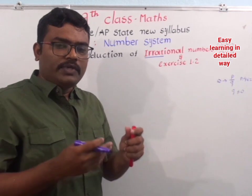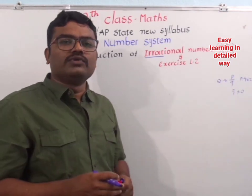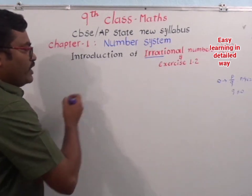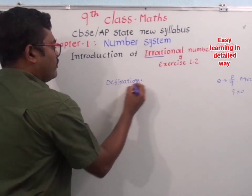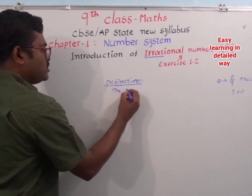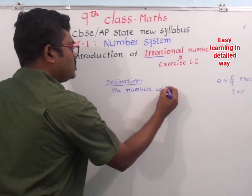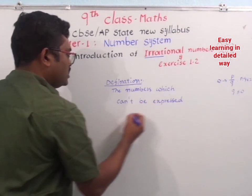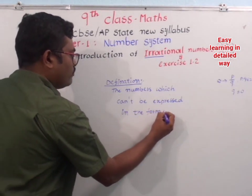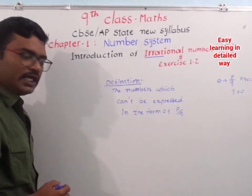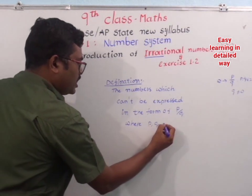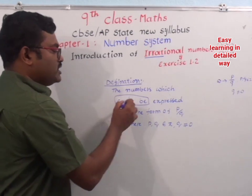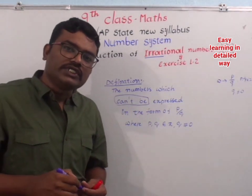Numbers in fractional form — P, Q are integers. For example, 7 or 3.2 — we can express them in fractional form. Now the definition of Irrational Numbers: those numbers which cannot be expressed in the form of P by Q, where P and Q belong to integers and Q is not equal to 0. Those numbers which cannot be expressed in this form are called Irrational Numbers.